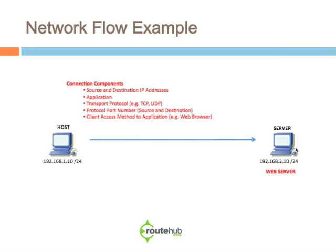Now we're taking the same graphical example and looking at it in terms of the actual connection. A host — a computer like you at home right now — with your IP address configured on your computer, or being NATed at your firewall or internet gateway, is going to initiate a connection to the web server. The connection components we'll walk through are: source and destination IP addresses, the application being used, the transport protocol, the protocol port numbers including source and destination, and the client access method to that application.